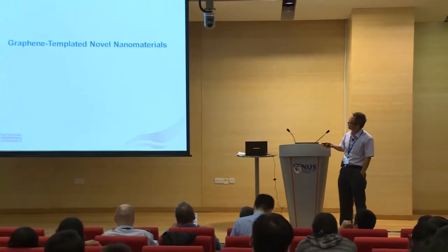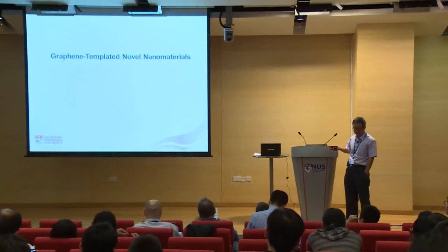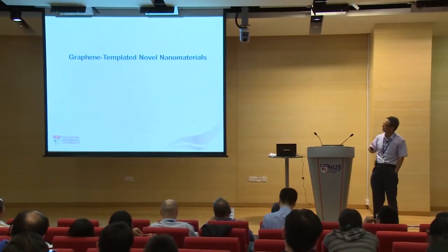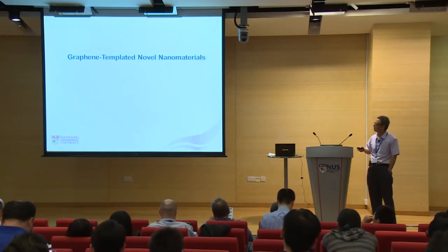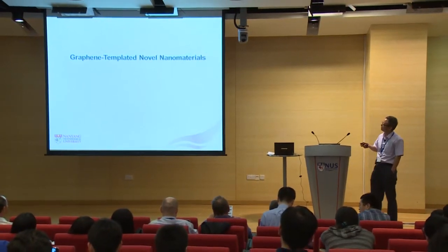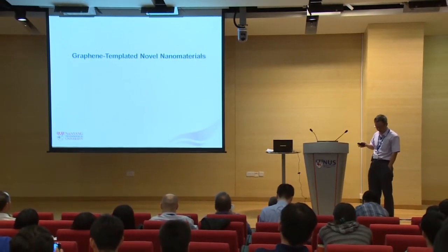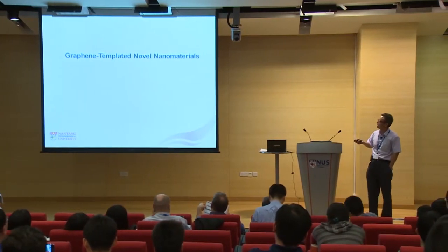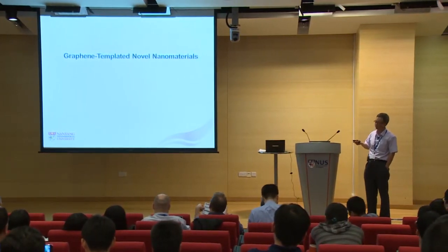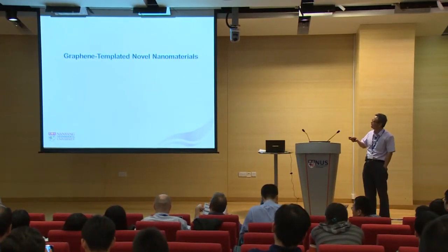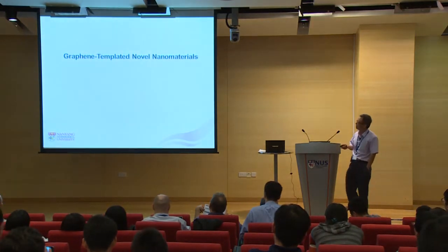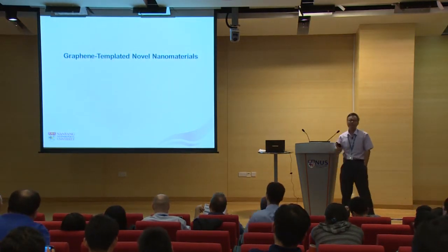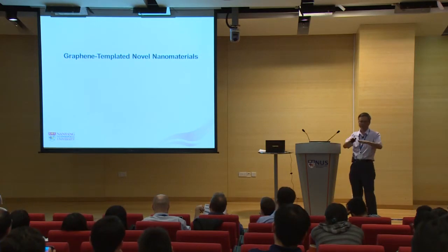We did graphene-related work about three to five years ago. In 2010, we started working on other 2D materials, for example, dichalcogenites. Here I show some recent work on how we can use graphene as a template to synthesize novel structures, especially anisotropic structures.